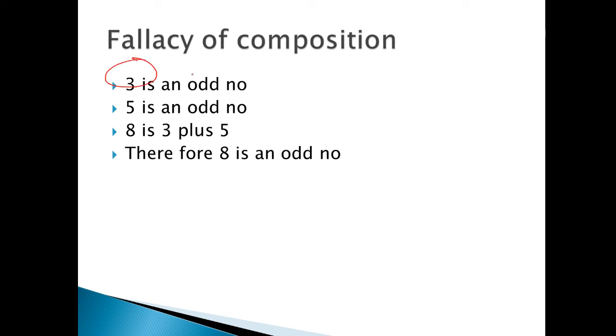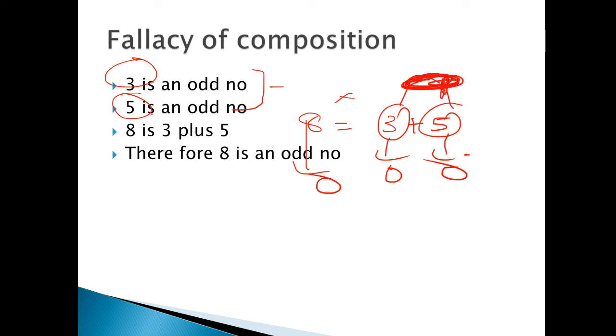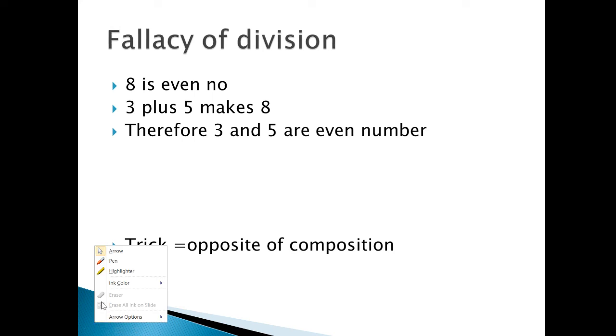Next comes composition. Very easy, pay attention. Three is an odd number, you know that. Five is also an odd number. So they said, well, five plus three makes eight. Since three is odd and five is odd, therefore eight is also odd. What an idiotic thing to say! When we combine two things - this is like this, that is like that, we combine both, so the third will also be like that - this is called fallacy of composition. So they said therefore eight is also odd.